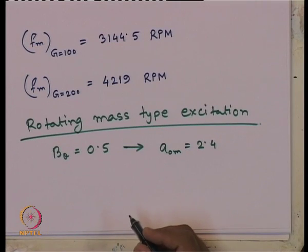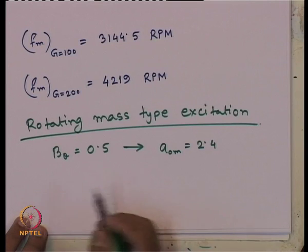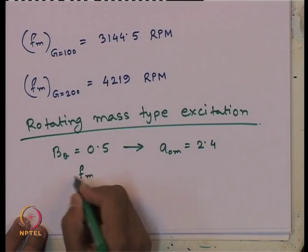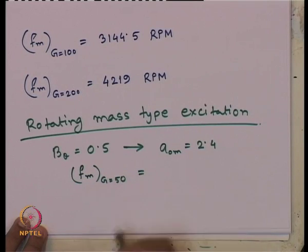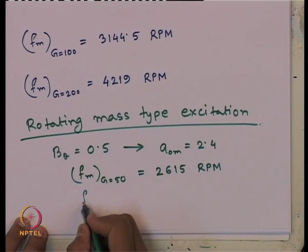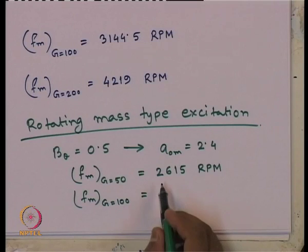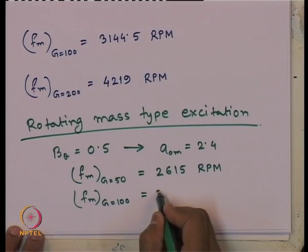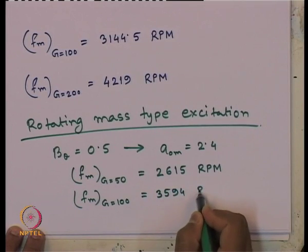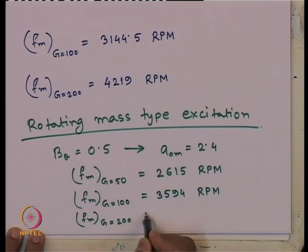Like for the vertical case we have seen Leismar's limit, but here no such limit exists, so for design consideration you can extend it. Putting this expression back into the calculation of f-m for three different types of soil: f-m with G equals 100 gives 2615 RPM, the next gives 3594 RPM, and f-m with G equals 200 gives 4822 RPM.